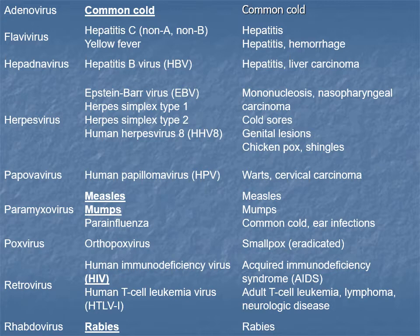Here are some common viruses and their common names: adenoviruses like the common cold; flaviviruses including different kinds of hepatitis; mononucleosis (mono); cold sores; chicken pox, which can become shingles when you're older; warts, caused by a virus — not from frogs; measles and mumps (vaccinated against to attend school); smallpox, eradicated largely through vaccines; HIV/AIDS; some leukemias and cancers associated with viruses; and rabies.